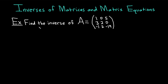We're going to do an example of finding the inverse of a 3x3 matrix. The question says to find the inverse of A equal to the matrix with entries 1, 0, 5, 3, 2, 0, and negative 1, 2, and negative 19. Let's go ahead and carefully work through this solution.